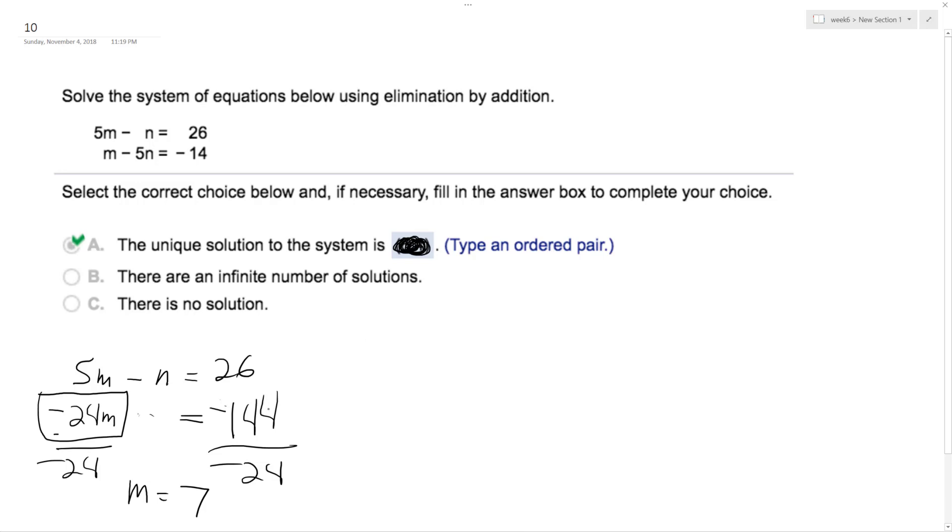So if m equals 7, I plug this in: 5 times 7 minus n equals 26. I get 35 minus n equals 26. Subtract 35 from both sides. Negative n equals negative 9, so n equals 9.